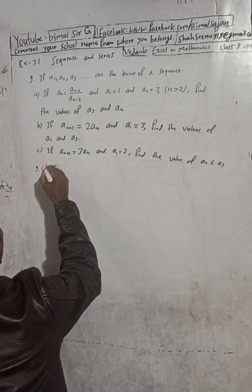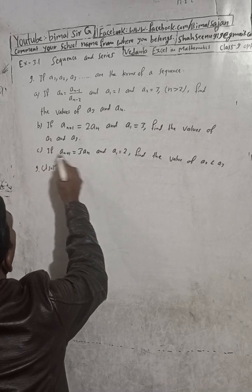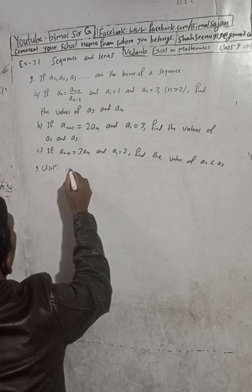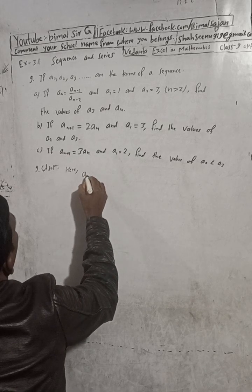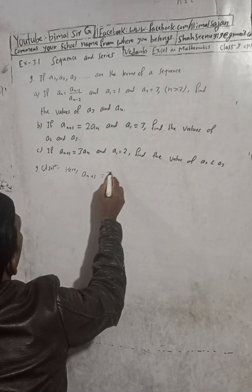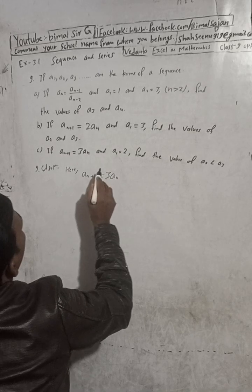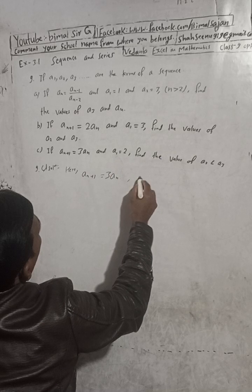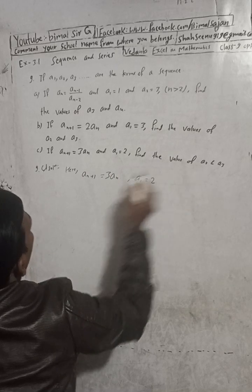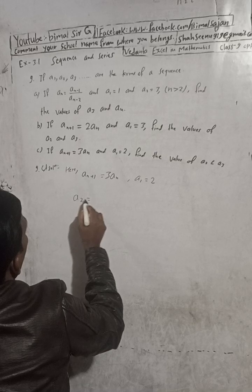Now part C of question 9. Given: a_(n+1) is equal to 3a_n, and a1 is equal to 2. Find the value of a2 and a3.